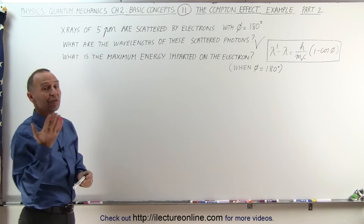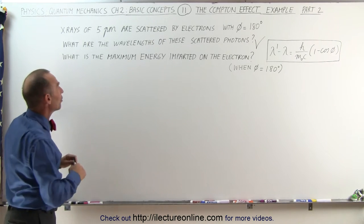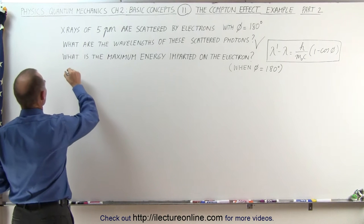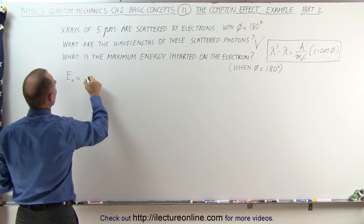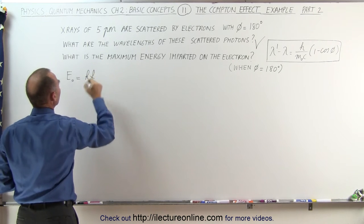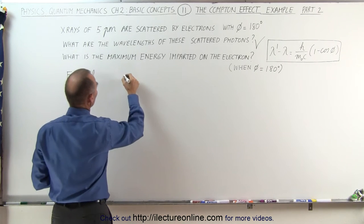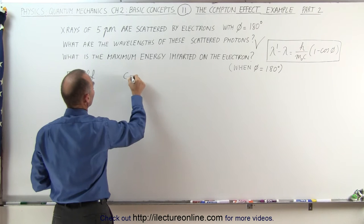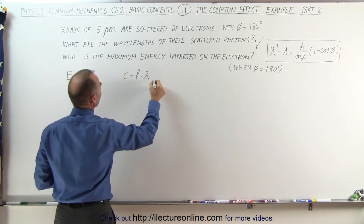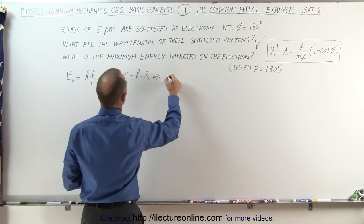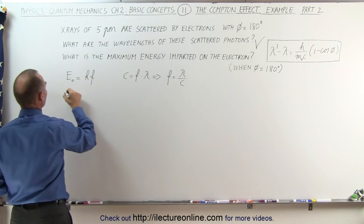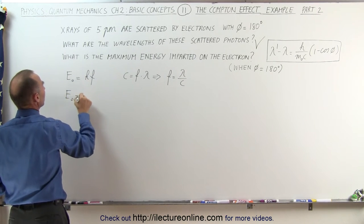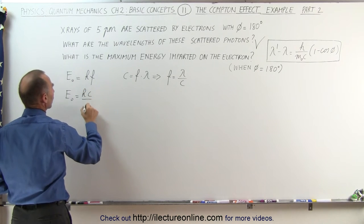So let's first find the energy of the incoming photons. The energy initially of the incoming photons is equal to h times the frequency of the photons, and since we know that the speed of light is equal to the frequency times the wavelength, we can then say that the frequency can be written as c over lambda, or we can say that the original energy is equal to hc over lambda.